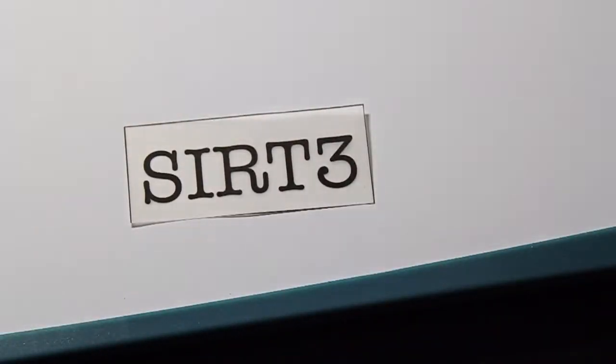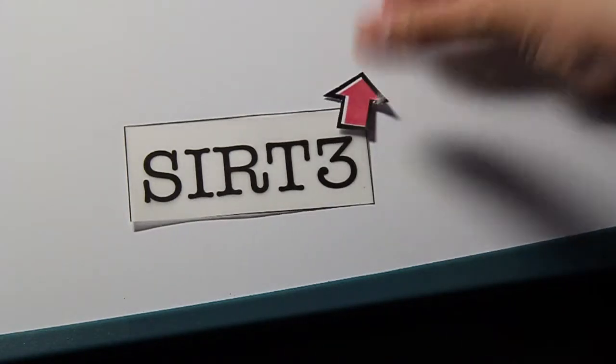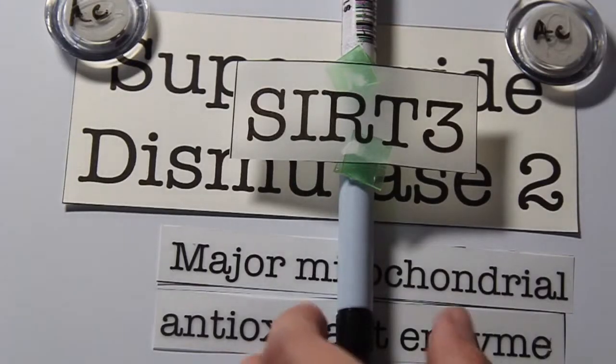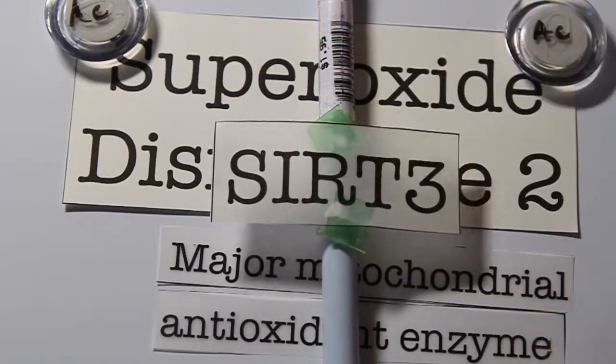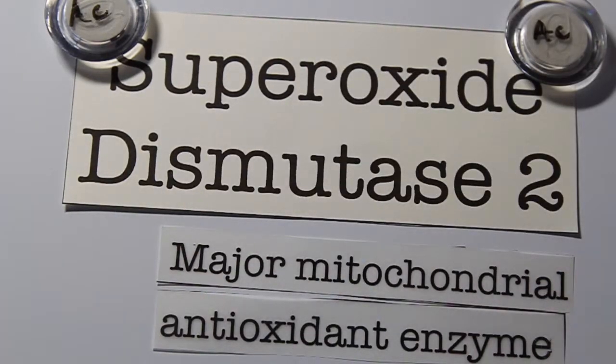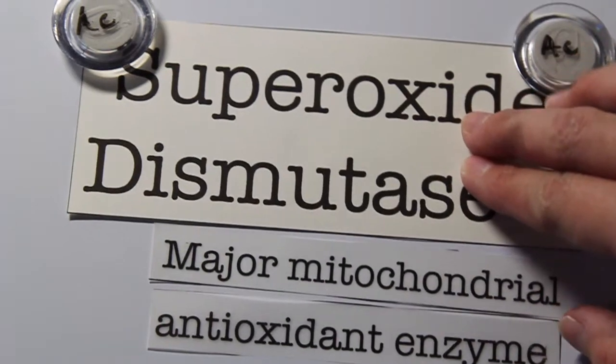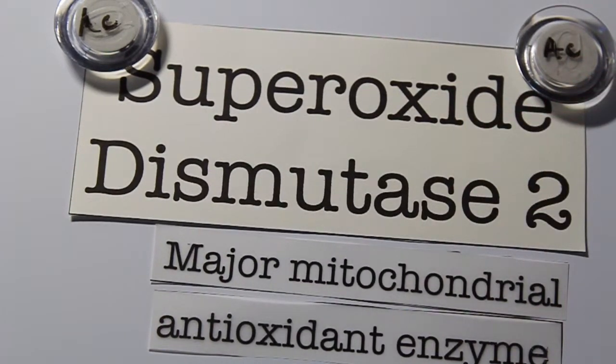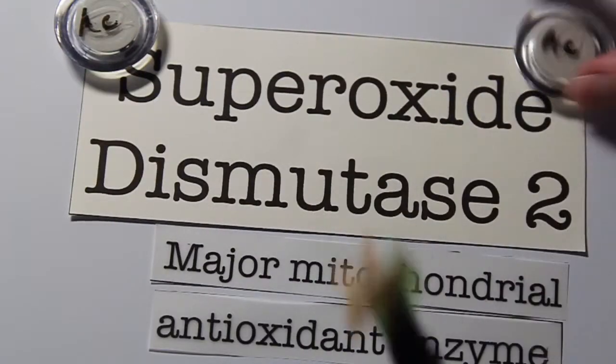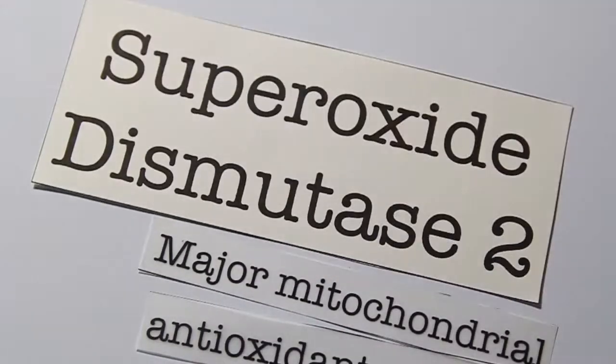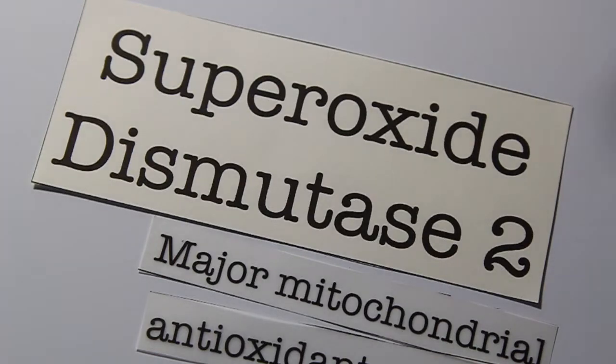In particular, calorie restriction has been shown to increase SIRT3 expression. SIRT3 is the mitochondrial deacetylase that has been shown to promote the antioxidant activity of a major mitochondrial antioxidant enzyme, superoxide dismutase 2. This is achieved through the deacetylation of two critical lysine residues on superoxide dismutase 2, which enhances its ability to reduce cellular ROS.